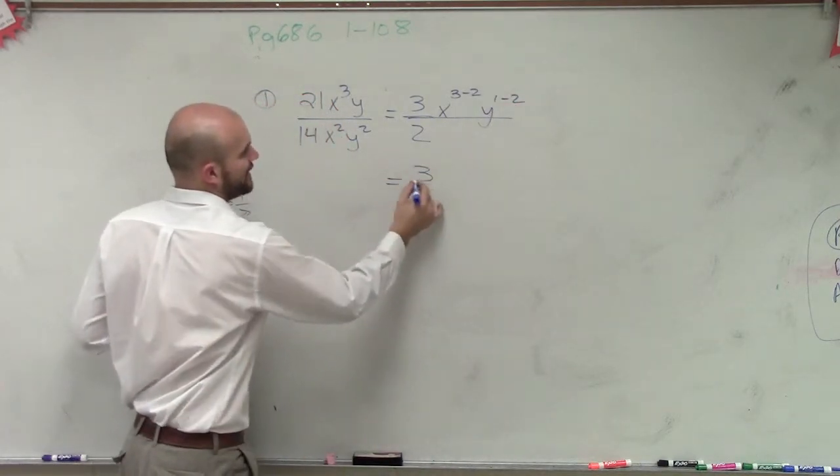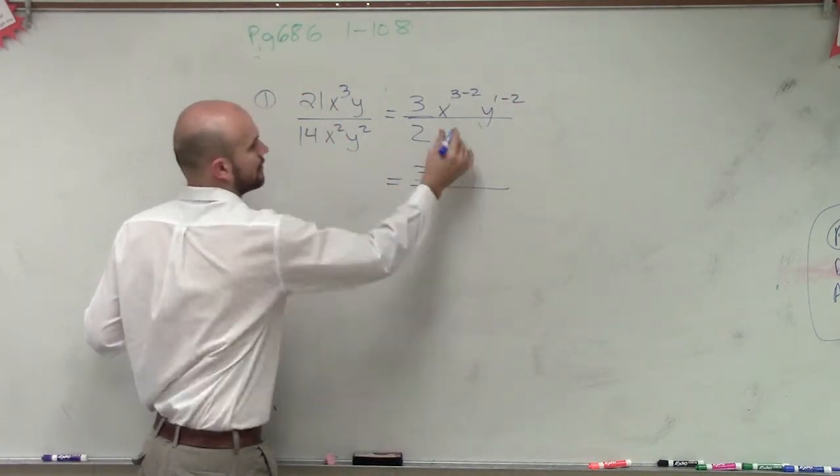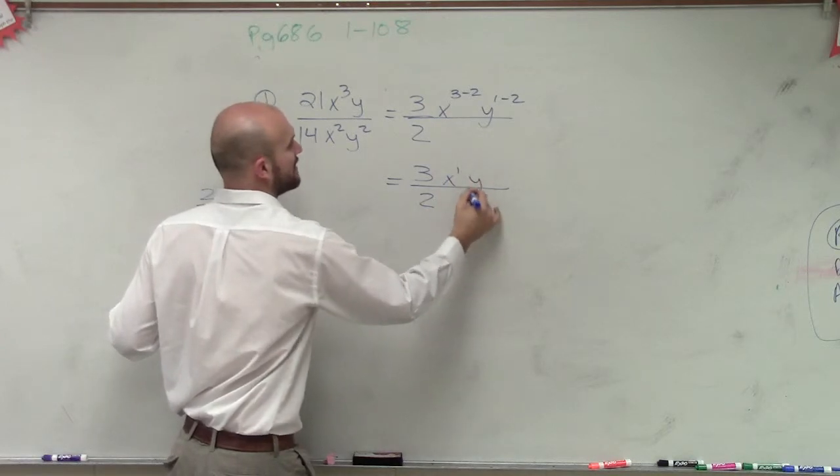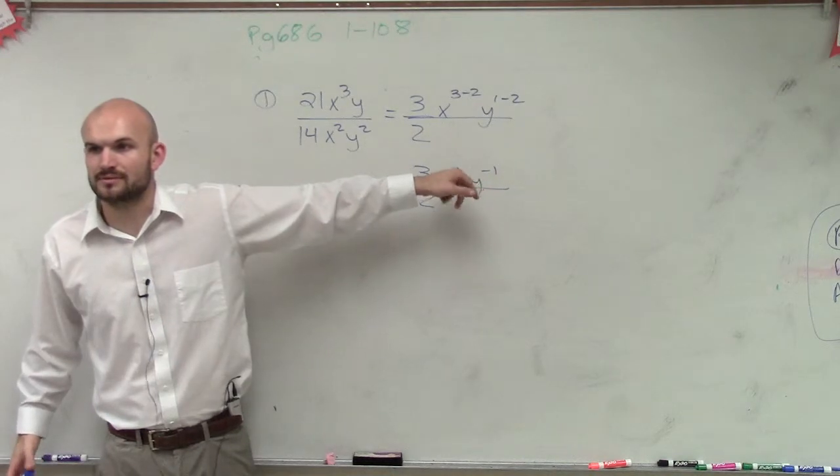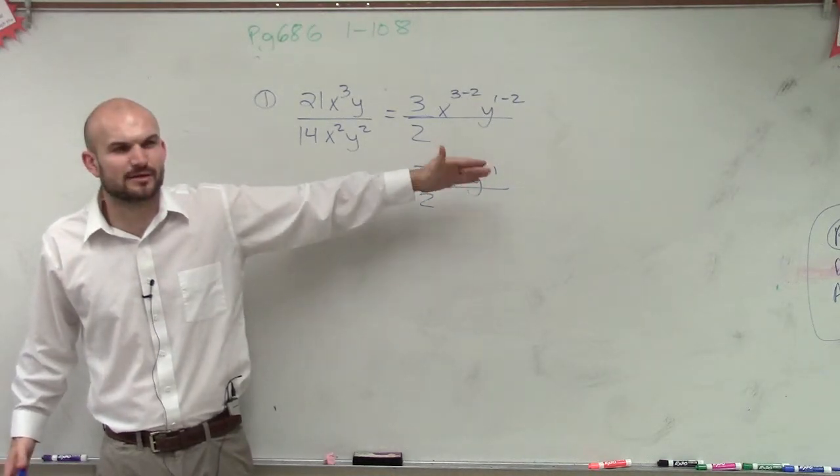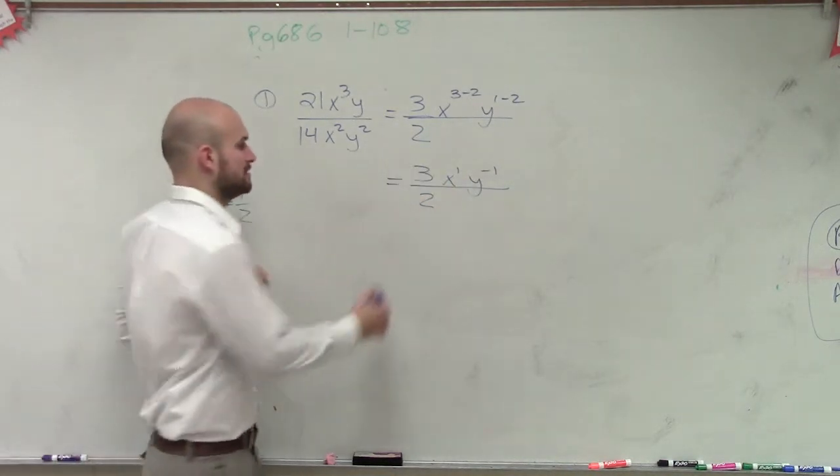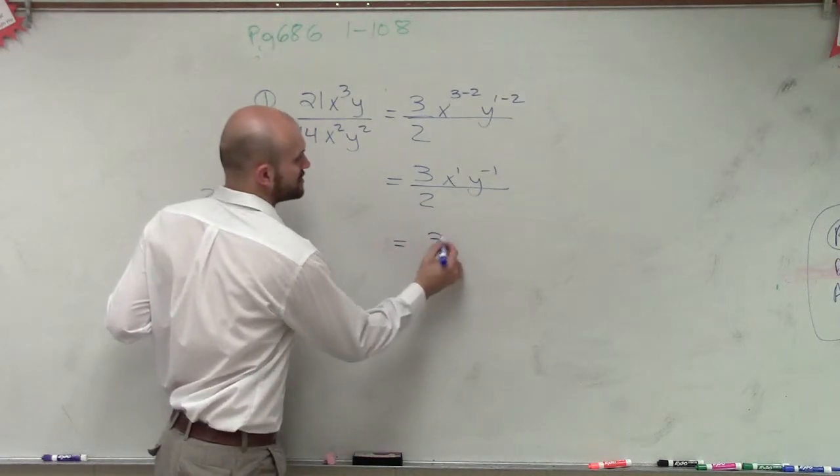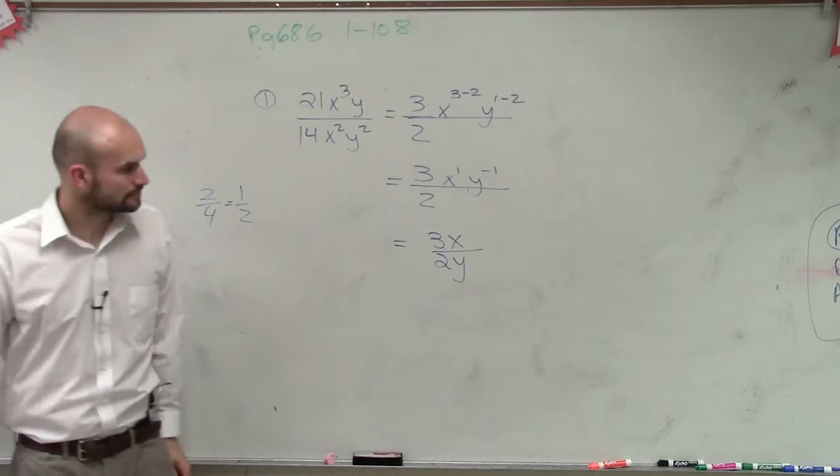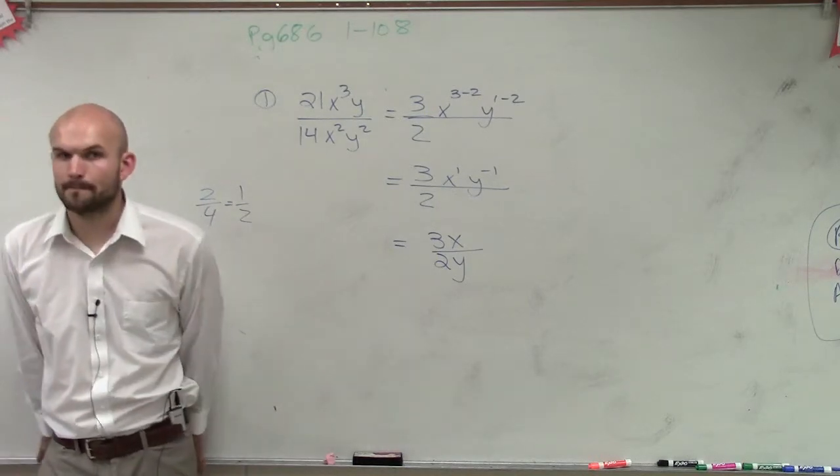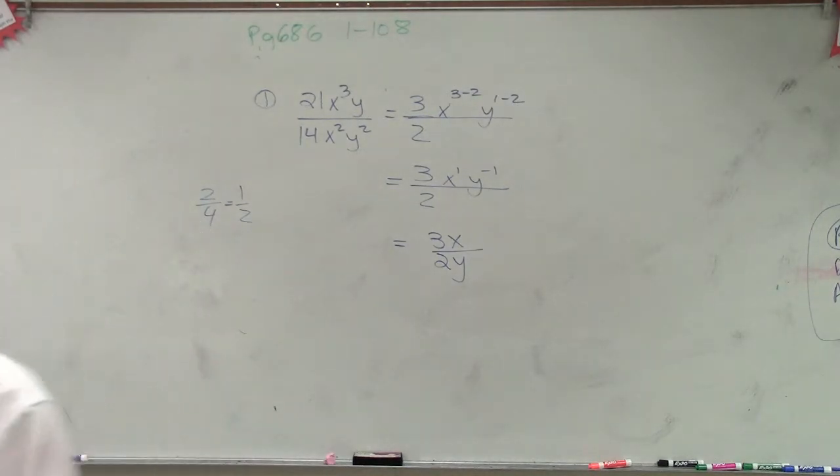So therefore, I have 3 halves, x to the first, and then y to the negative first. Now remember, when it's y to the negative first, where does it go? Where do we put the negative exponent? In the denominator. So my final answer is going to be 3x over 2y. OK, and that's that answer. Done.